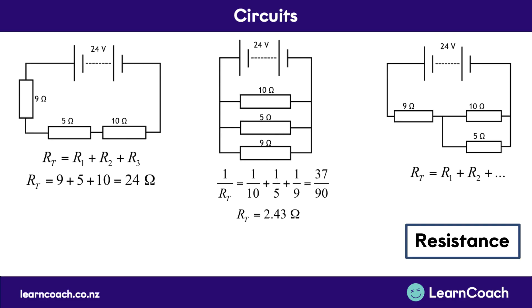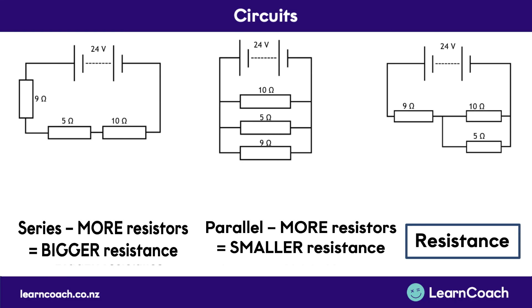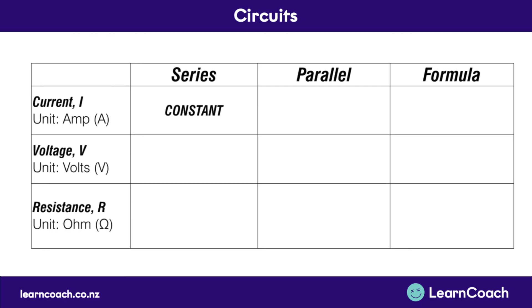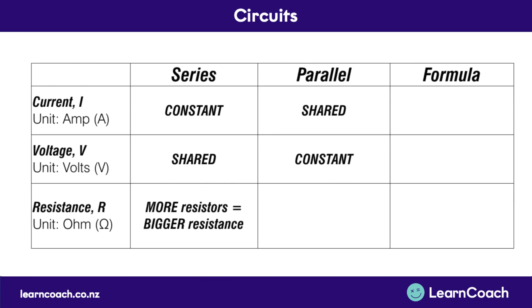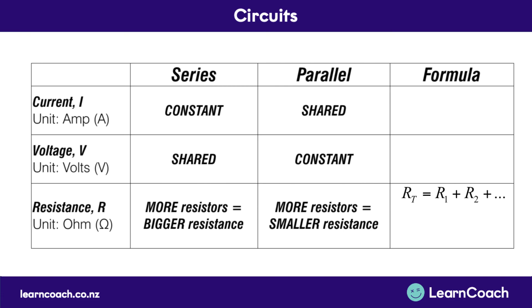A quick summary: for series circuits, more resistors means bigger resistance; whereas for parallel circuits, more resistors means smaller resistance. In series circuits, current is constant; in parallel, it's shared. Voltage in a series circuit is shared; in parallel, it's constant through each branch. And for resistance: in series, more resistors means bigger resistance; in parallel, more resistors means smaller resistance.